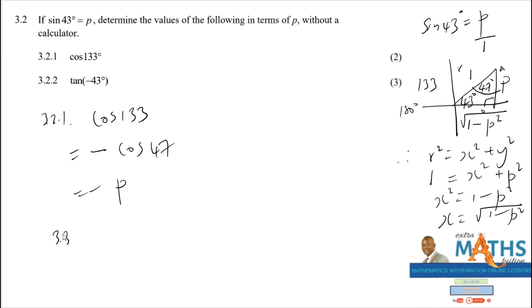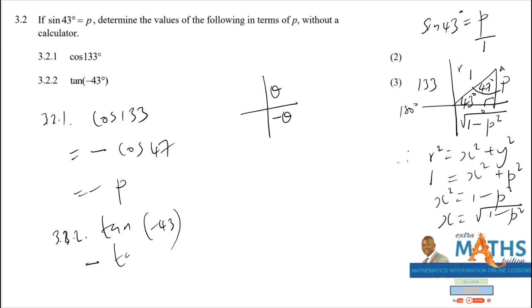For 3.2.2: tan(-43°). A negative angle means we are on the fourth quadrant. Tan is negative on the fourth quadrant: -tan 43°. Tan 43° = opposite/hypotenuse — wait, tan is opposite over adjacent = P / √(1 - P²). So tan(-43°) = -P / √(1 - P²).